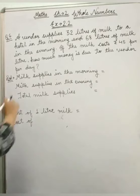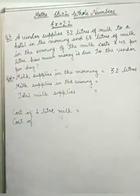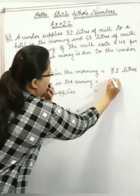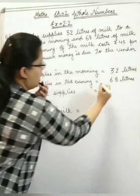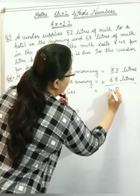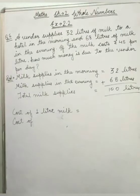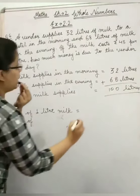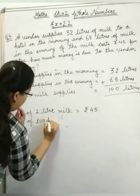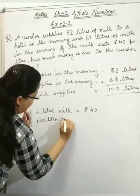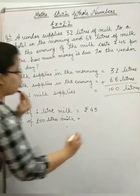So, milk supplies in the morning: 32 liters, in the evening: 68 liters. So total milk supplied is 100 liters. Cost of 1 liter milk is 45, so cost of 100 liters milk is 45 multiply by 100.